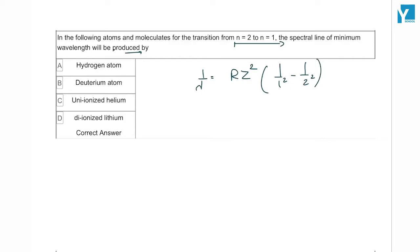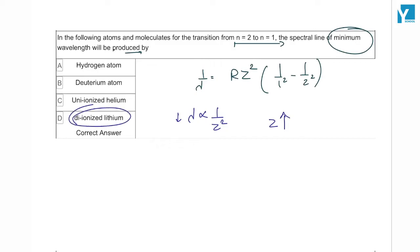Here you are asked for the value of minimum wavelength. Since wavelength is inversely proportional to z², the largest z gives the smallest wavelength. So the atom or molecule with the biggest z will be your answer.